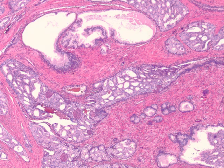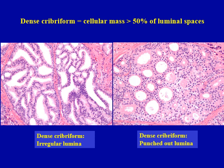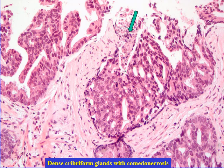Here is the classic example of intraductal carcinoma. You see large branching glands with a dense cribriform growth pattern. Dense cribriform is defined as a cellular mass occupying more than 50% of luminal space. Lumina may be irregular or sharply punched out, like DCIS of the breast. The next criteria is intraluminal comedonecrosis. Recent studies have shown that intraluminal comedonecrosis is more commonly associated with intraductal process than Gleason pattern 5 prostate cancer.